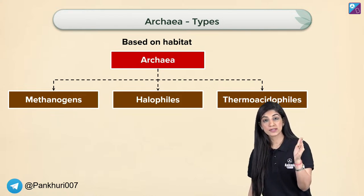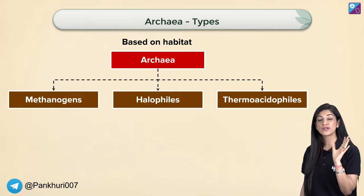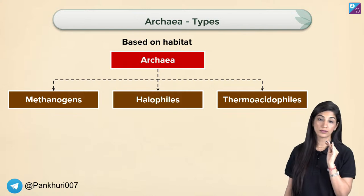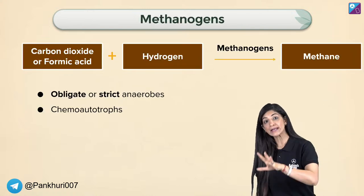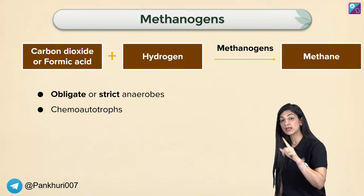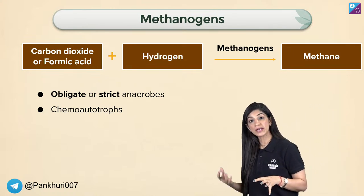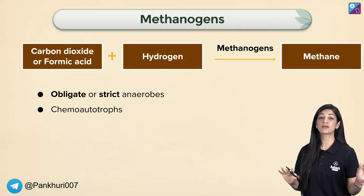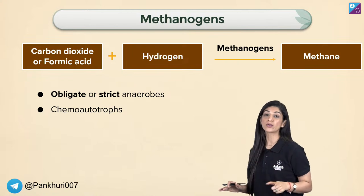Methanogens, halophiles, and thermoacidophiles — 'phile' or 'file' means loving. Methanogens are obligate anaerobes — they will work only without oxygen. Commercially, methanogens are important — you study this in both chemistry and biology. We have commercially grown methanogens. Why? Because of cattle dung — this is one of the major applications of organic farming.